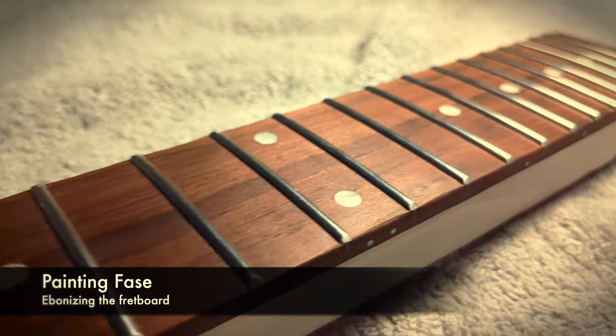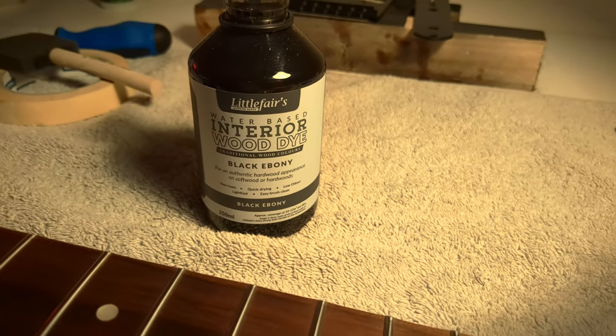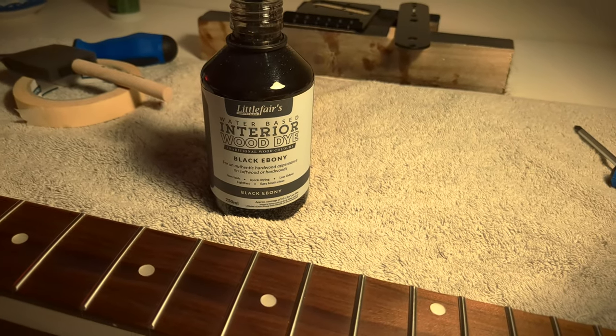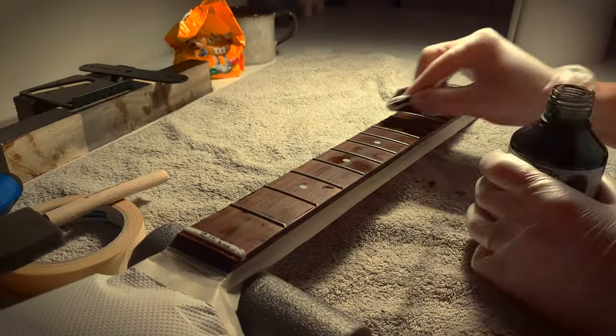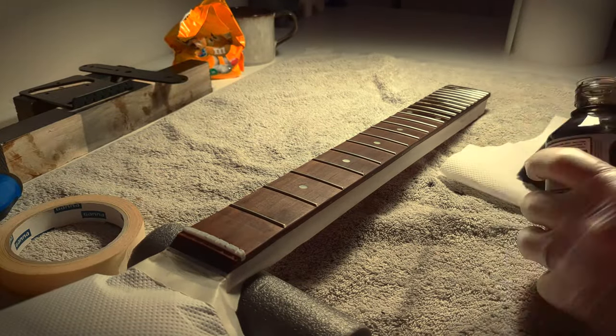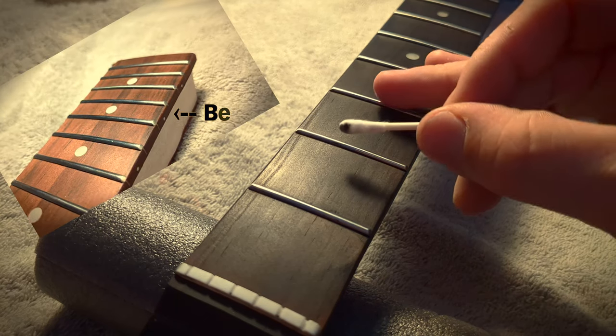I then decided to ebonize the fretboard using a water-based stain, since the entire guitar is red and black. I used a few layers and I think it came out beautifully. I didn't bother taping off the frets and the dots, because I could just use a q-tip and some paint thinner to remove the stains.